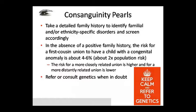To summarize the consanguinity protocol: First, take a detailed family history. Second, identify any familial or ethnicity-specific disorder and screen accordingly. Third, if there is no positive family history, inform the couple of the risk — a first cousin union carries four to six percent chance of congenital anomaly. The risk for a more closely related union is higher; for a distantly related union, it is lower. Finally, if there is any doubt, refer them to genetics consultation.